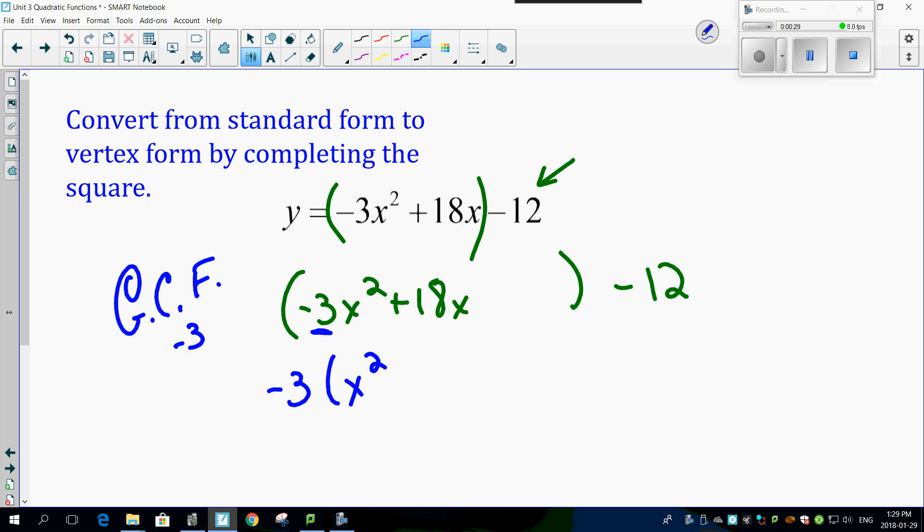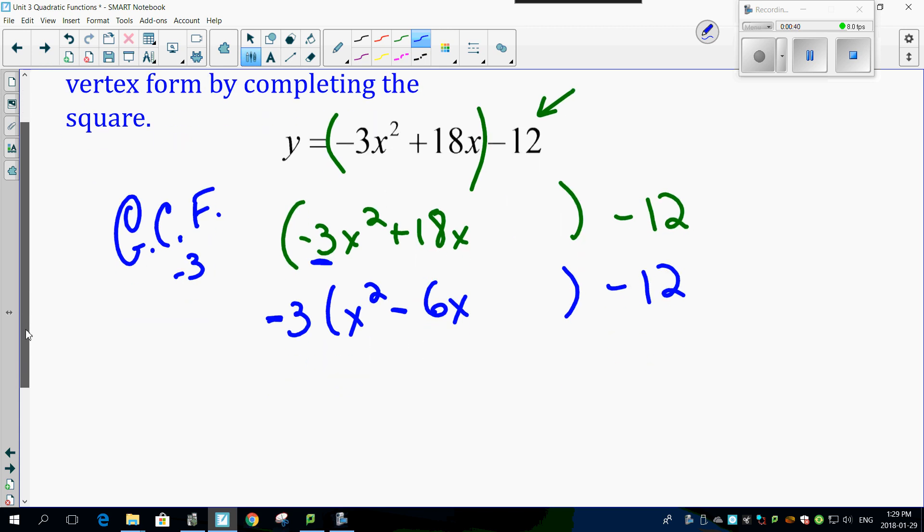...giving you x squared. And don't forget, if you're factoring out a negative now, every sign changes. So that's x squared, and that's now minus 6x, minus 12. Same, same, same. Look at this.